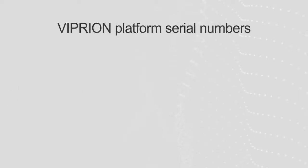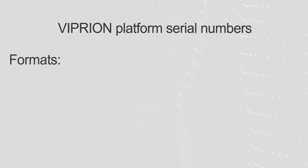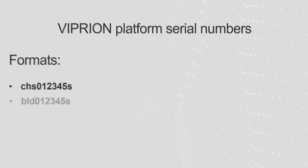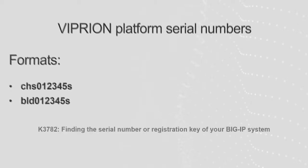For Viprion platform models, the chassis and each blade have a unique serial number. The serial number barcode sticker for the chassis is located on the front of the system. The chassis serial number begins with the letters CHS, followed by six numeric characters, and ends with the letter S, as in this example. Blade serial numbers begin with the letters BLD, followed by six numeric characters, and end with the letter S, as in this example. For detailed information on hardware serial number formats and locations, refer to this article linked in the description below the video.